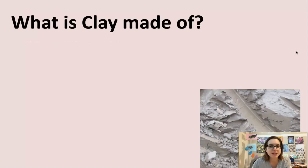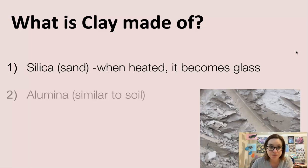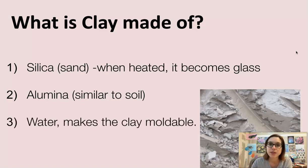So what is clay made of? It's made of three basic ingredients. Silica, which is kind of like sand — when it's heated, it becomes glass. Alumina, which is similar to soil and helps give some body to the clay. And water, which makes the clay moldable. Water is really important in ceramics.